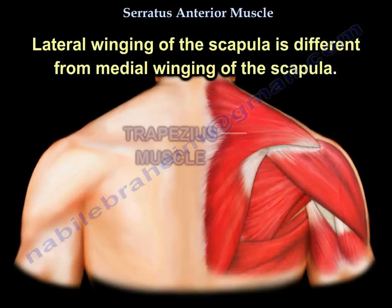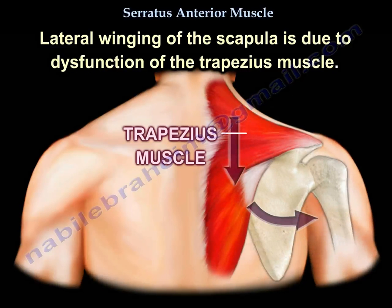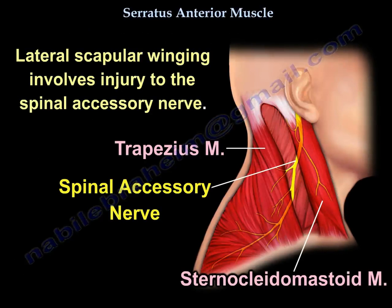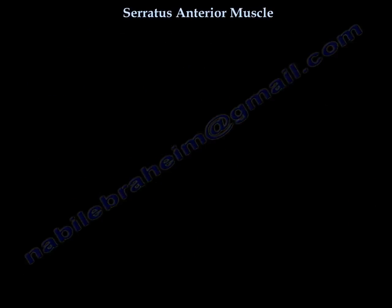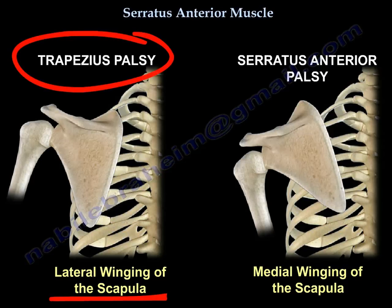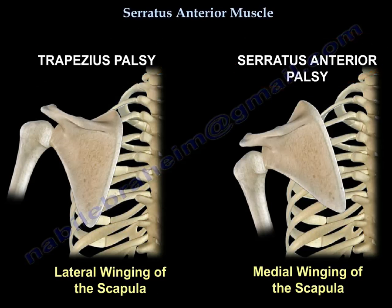Lateral winging of the scapula is different from medial winging. Lateral winging is due to dysfunction of the trapezius muscle and involves injury to the spinal accessory nerve. Here you can see the difference between the two types: lateral winging occurs in trapezius palsy, while medial winging occurs in serratus anterior palsy. You can also see the difference in the position of the scapula itself.